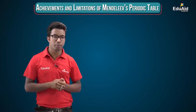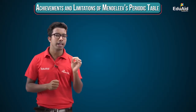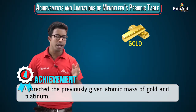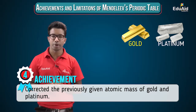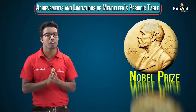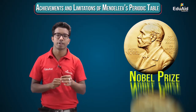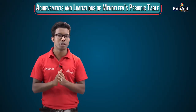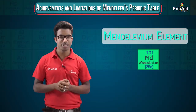Additionally, when Mendeleev was arranging elements with increasing atomic mass, he was able to correct the atomic mass of certain elements — for example, gold and platinum. These are the main achievements of Mendeleev's periodic table, and he was largely successful in his classification of elements. This is why Mendeleev is known as the father of the periodic table. To mark his contribution, element 101 was named Mendelevium after him.